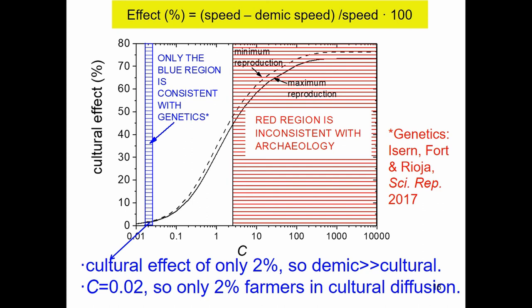Only about 2 percent of farmers were involved in cultural diffusion, meaning 98 percent of farmers played no role in cultural diffusion. This conclusion had not been obtained before, but it is in agreement with genome-wide data showing that the spread was overwhelmingly demographic. Genome-wide data alone cannot be used to estimate the number of farmers for technical reasons, so the cultural effect was only about 2 percent. This concludes the talk.